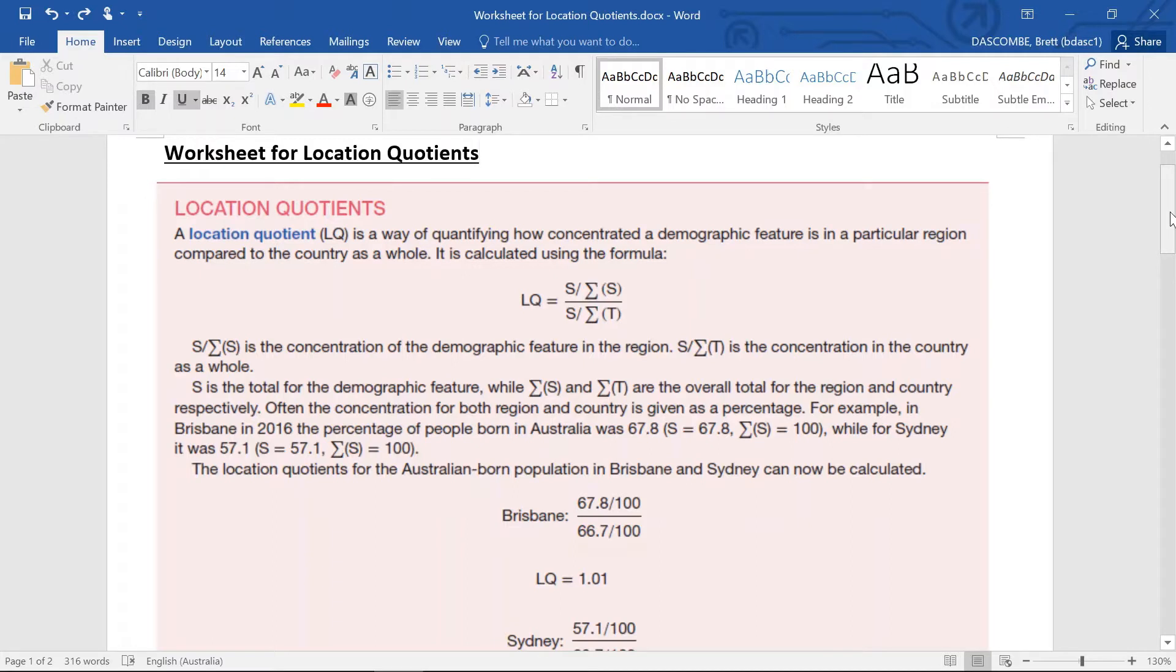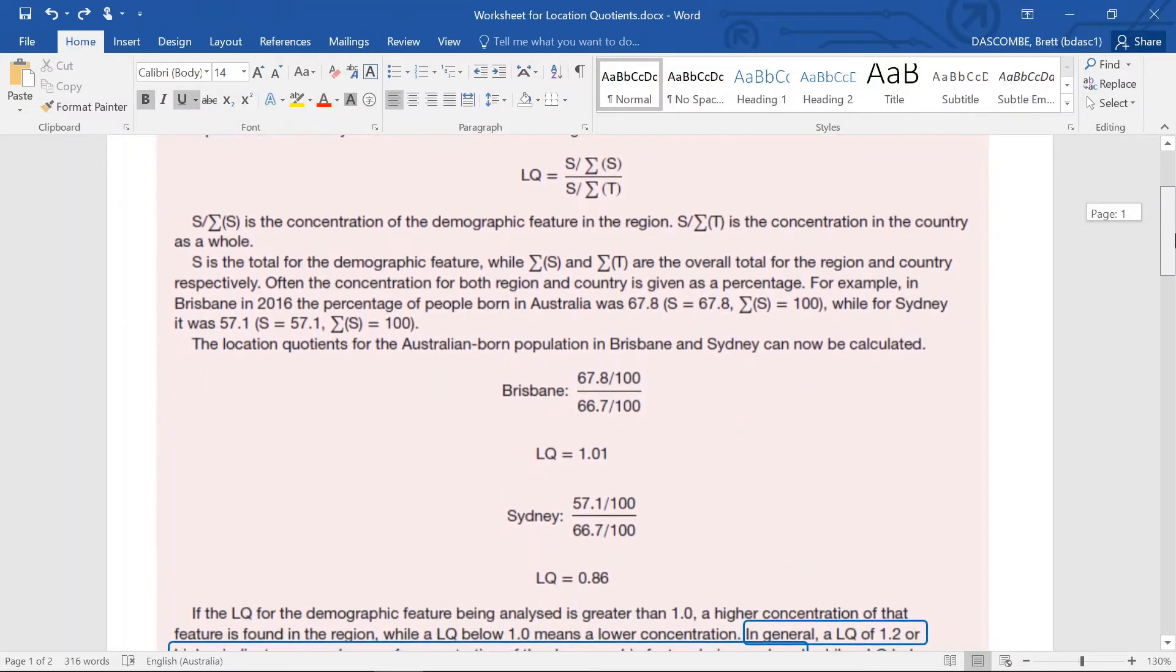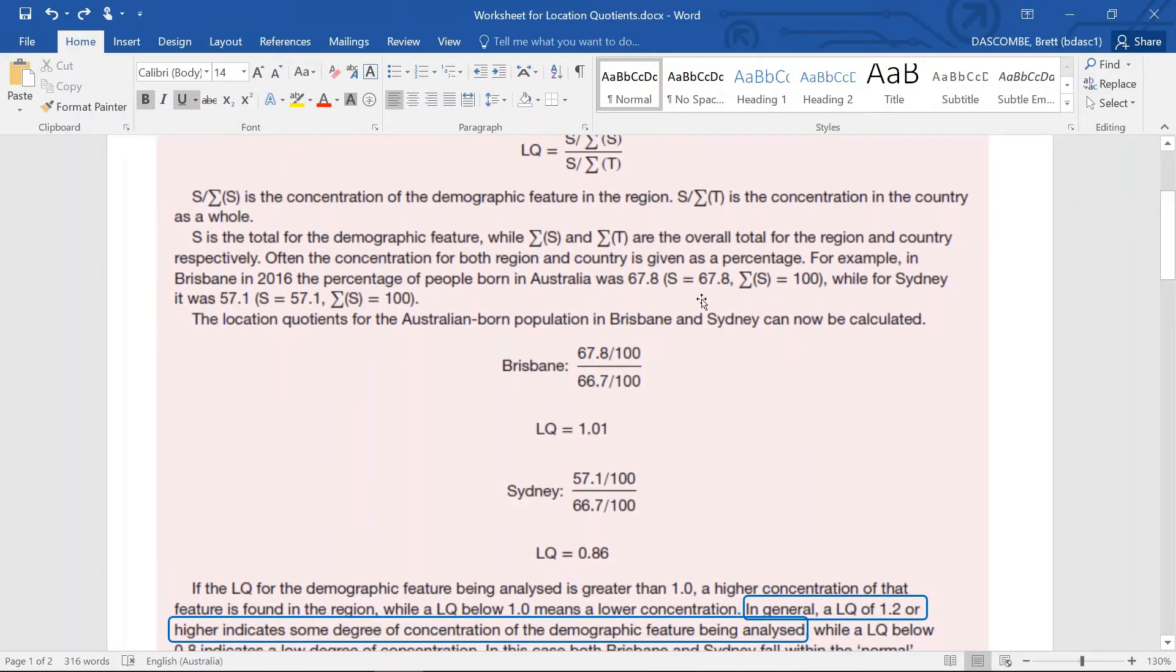Now that formula looks rather complicated, but when it's broken down it's quite easy to understand. So let's go through that. What we're going to do is actually look at the location quotient for Australian-born populations in Brisbane and Sydney and how that's calculated.